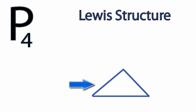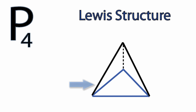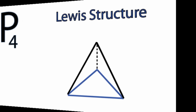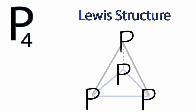We'll then add the top of our pyramid. You can imagine that these two ends in the front are out towards us, and then this part right here is back in the screen, and then we have the top of the pyramid. We're going to put a phosphorus atom on each corner. This phosphorus right here is going back into the screen, while these two are closer to us.